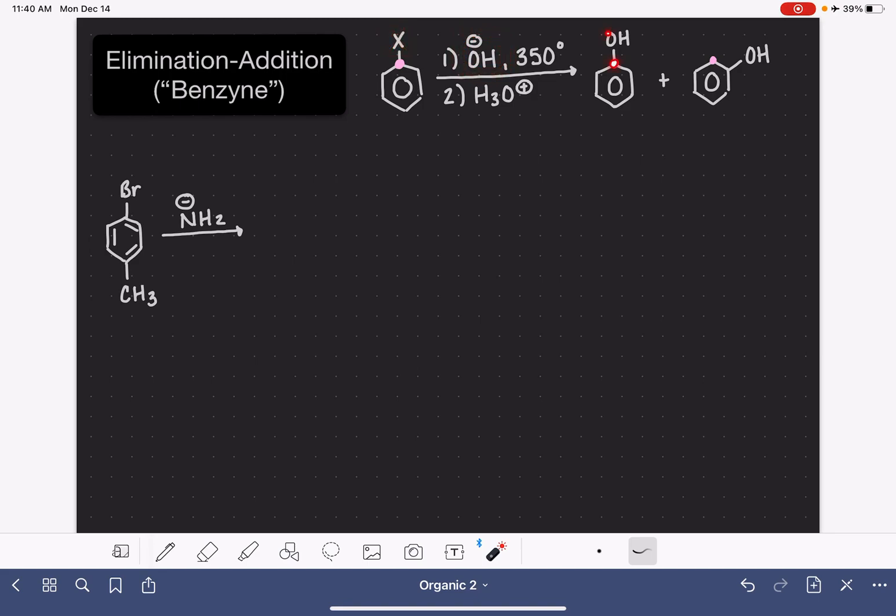Some of the products will have the OH group attached to the exact same carbon as our halogen, and some of the products will have the OH group on the carbon that is ortho to where our halogen used to be. For this particular example, because these two products are identical, it doesn't really matter, but as you can imagine, if we had another substituent present on this ring, we would be getting two different products out of this reaction.